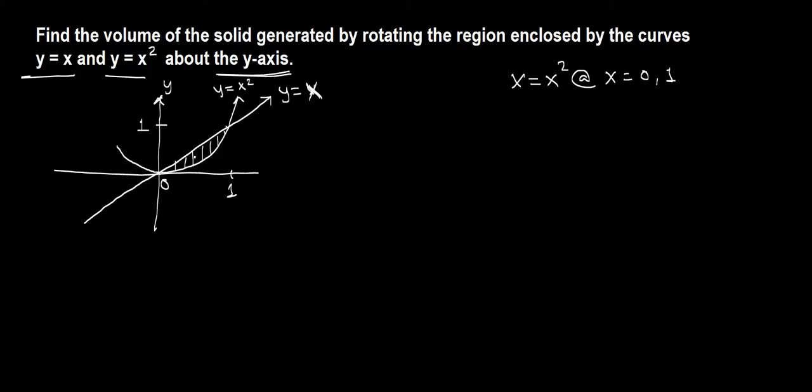Okay, now we want to rotate this region about the y-axis, so we need to take a sample slice that should be perpendicular to the y-axis because we are rotating about the y-axis. Here is the sample slice of small thickness delta y. Because this will be in terms of y, so delta y small thickness. That means we need to write the curves in terms of a function of y because it has small thickness here of delta y.